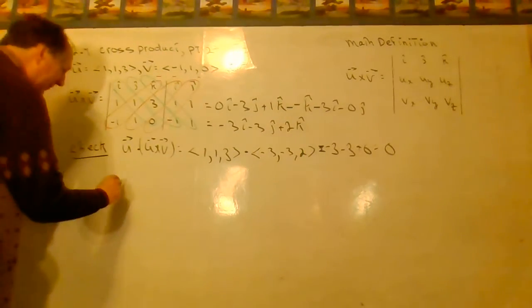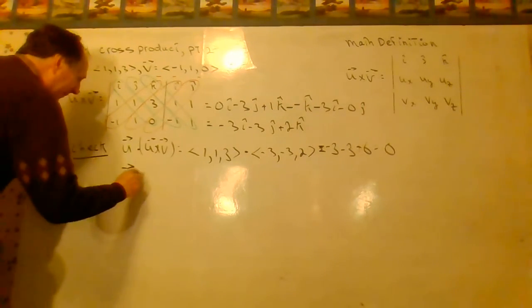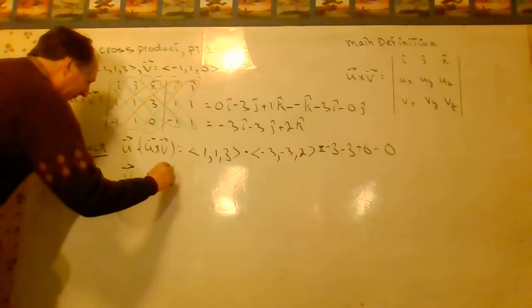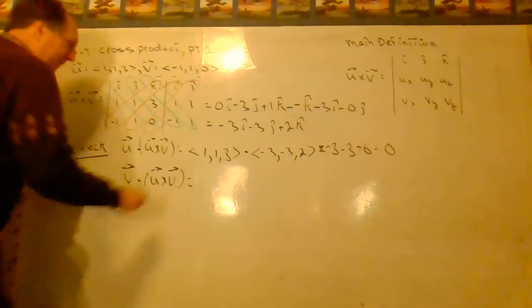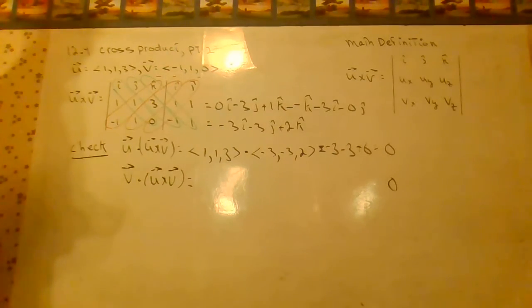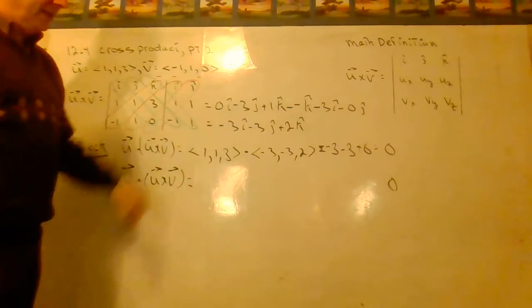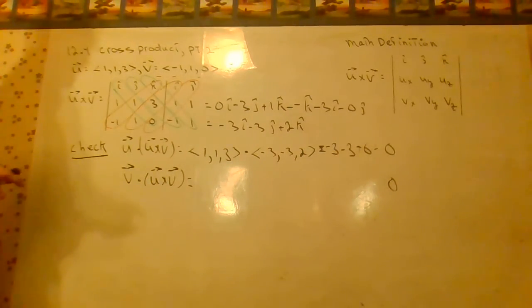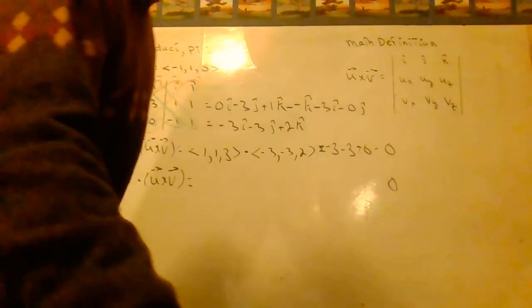I'll leave it to you to check V dot U cross V. You do get 0. You can go ahead and substitute. That's the determinant definition. Part 3 we'll talk about some geometric applications of the cross product. That's all for now.